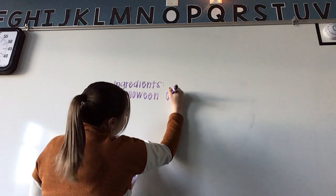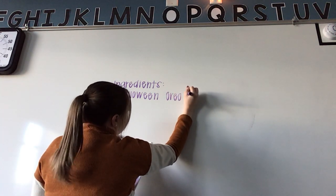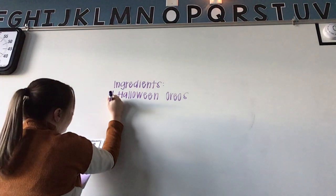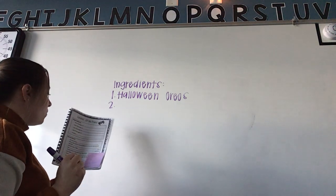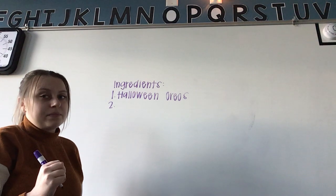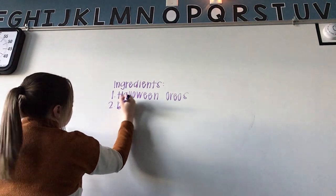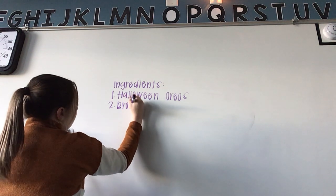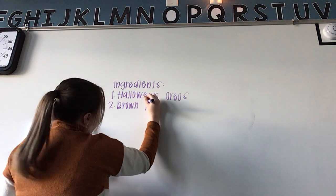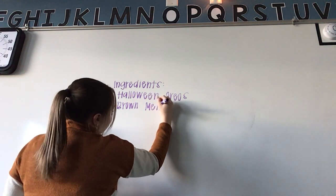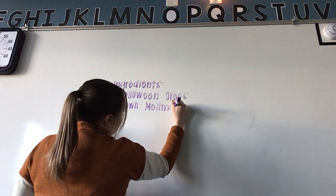Okay, then we need one package of, what do you guys think it's gonna be? Brown melting chips, like brown melting chocolate. We can write melting chocolate. We need melting chocolate in like every single recipe, huh guys? It helps us decorate.